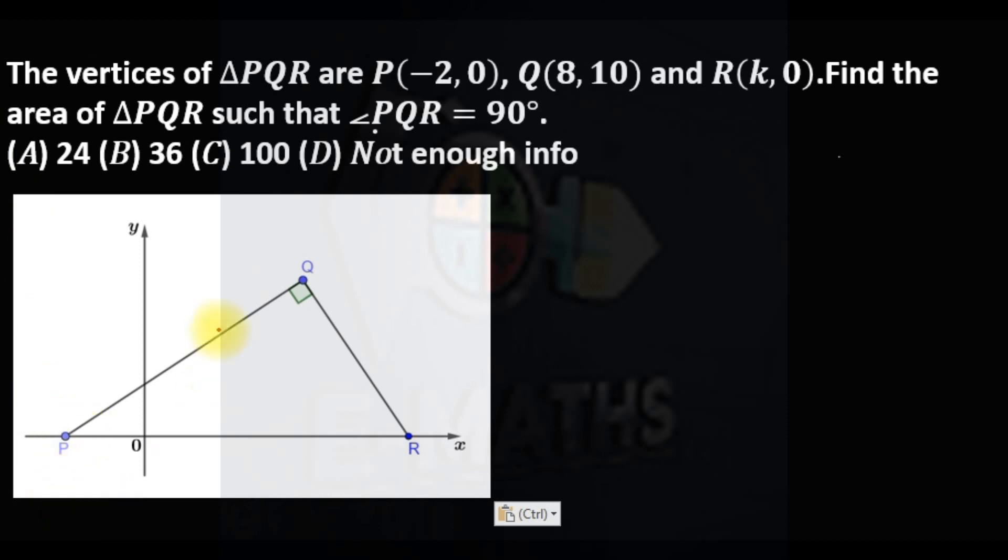So the coordinates are: P is as you can see, Q and R. Q is 8 comma 10, R is k comma 0, P is minus 2 comma 0. Meaning that from here to here is 2 units from the origin.